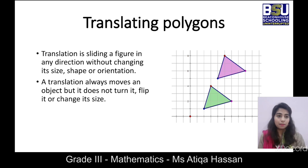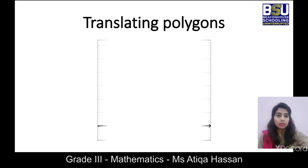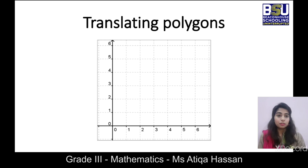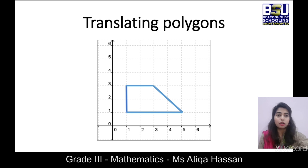The shape remains the same, the size remains the same — only the position changes. Now let's look at another example of how polygons are translated. I'm giving you the example of a trapezium drawn in the coordinate system. It has four corners, so it has four coordinate pairs. The first point is (1, 1), the second point is (1, 3), the third point is (3, 3), and we'll see the fourth point next.